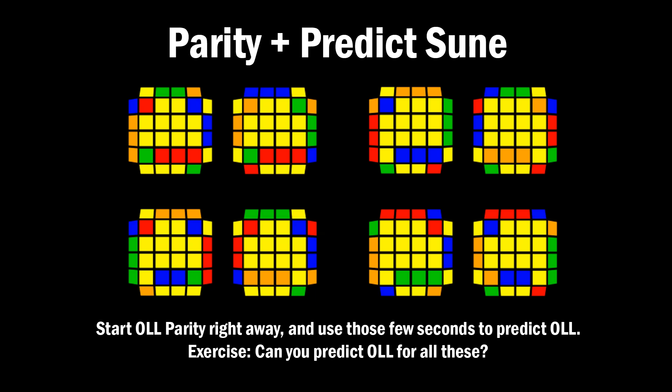So on screen right now, I'm showing all of the cases that fall into the Parity plus Soon category. For all of these, you should be able to predict which soon case it's going to be and do OLL Parity plus OLL without a pause in between.